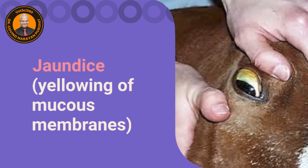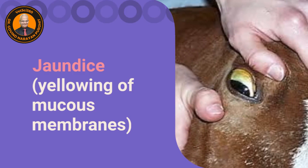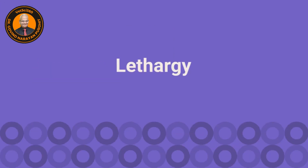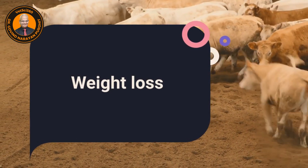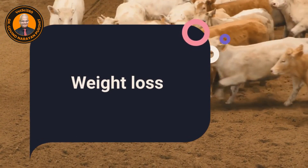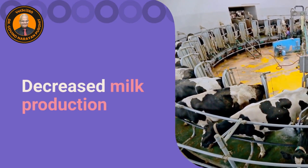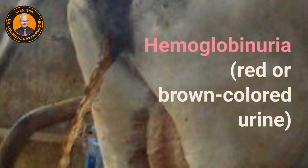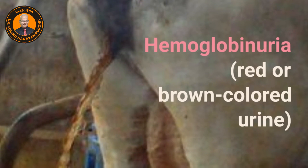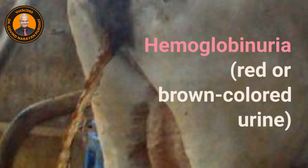The animal has jaundice — yellowing of the mucous membrane — as you can see here, there is a slight yellowing of the mucous membrane of the eye. There is lethargy, the animal is very lethargic, and there is weight loss. There is a decrease in milk production, and the animal may show difficulty in respiration. A consistent sign mostly noticed is hemoglobinuria — red or brown colored urine — which is alarming.